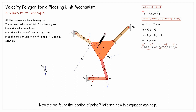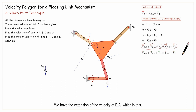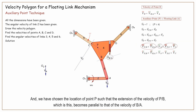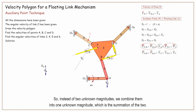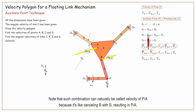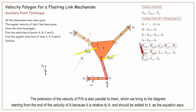Now that we've found the location of point P, let's see how this equation can help. We have the extension of the velocity of B with respect to A, and we have chosen the location of point P such that the extension of the velocity of P with respect to B becomes parallel to that of the velocity of B with respect to A. So instead of two unknown magnitudes, we combine them into one unknown magnitude, which is the summation of the two. This combination can naturally be called velocity of P with respect to A. The extension of the velocity of P with respect to A is brought to the diagram, starting from the end of the velocity of A, because it is relative to A and should be added to it.